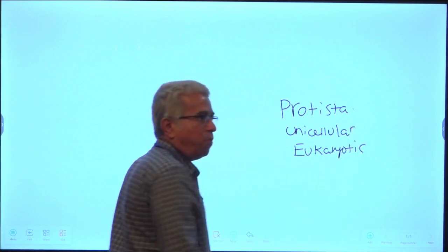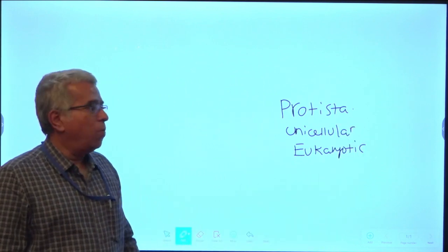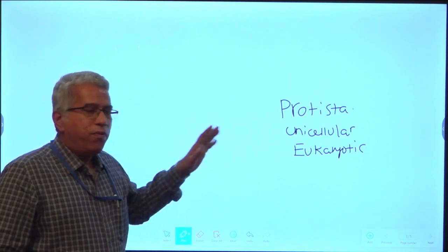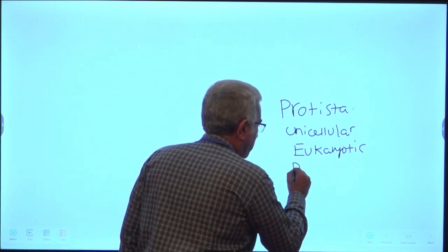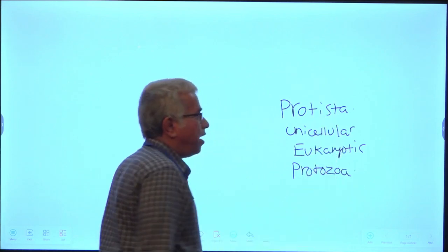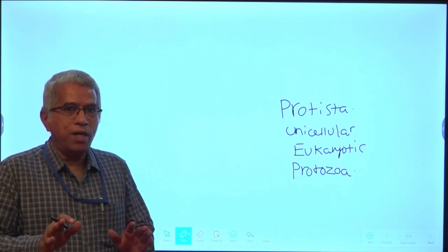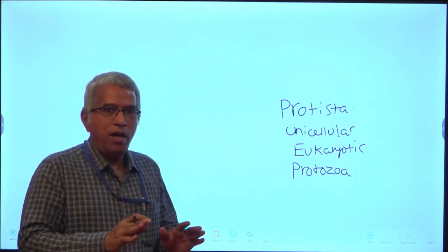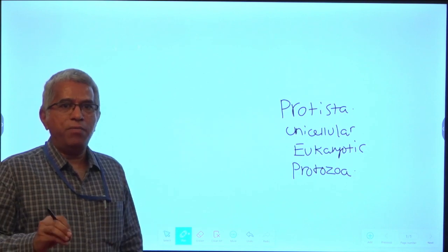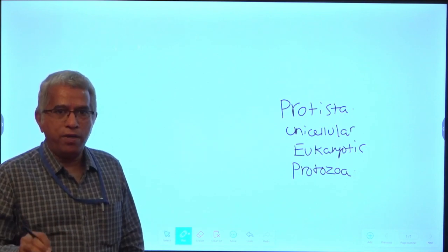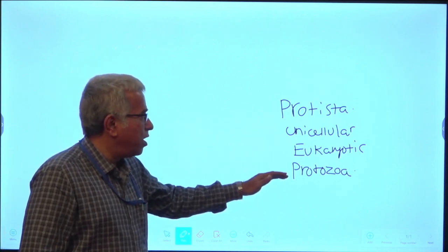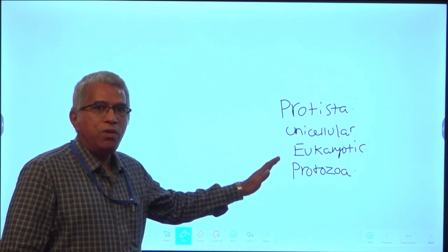Unicellular eukaryotic organisms are included under Protista. One phylum by name Protozoa is included under Protista. So we have seen two kingdoms: Monera, which includes bacteria that are unicellular prokaryotes, and Protista, which includes protozoans that are unicellular but eukaryotic.